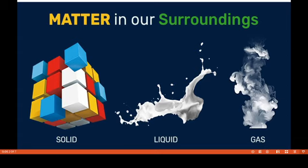We can also see other human beings, various animals, plants, and trees around us. These things are examples of matter. So from this we can answer the question: what is matter? Anything which occupies space and has mass is called matter. This matter can be classified in two ways — based on physical properties and based on chemical properties.